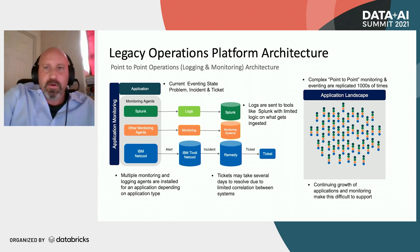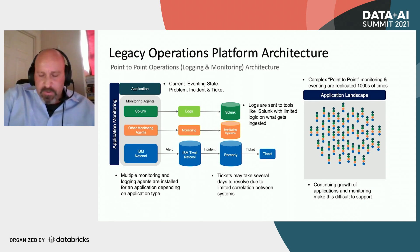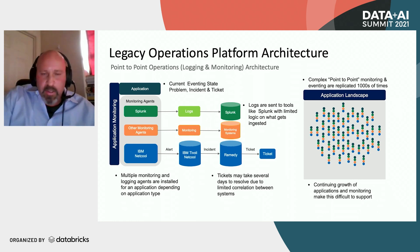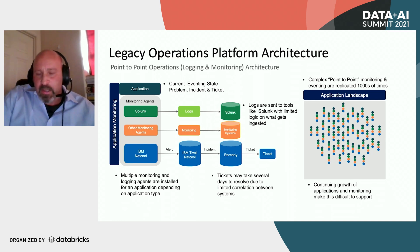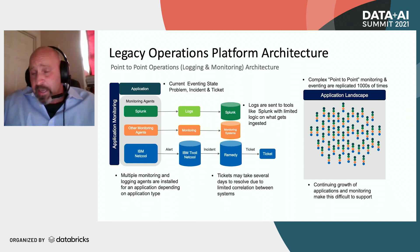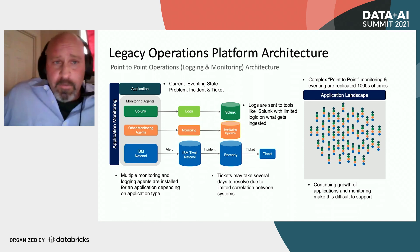One of the challenges with current operations is the legacy operation platform architecture. Most pre-AIOps architecture is mainly around logging and monitoring. If you look at this diagram, you'll notice that most applications are instrumented with agents like Splunk, Elasticsearch, or Netcool. Each application, whether running on bare metal or VM, has that agent implemented and they all send logs simultaneously. The result is a chaotic, point-to-point environment with a lot of replication and duplication of data, as well as the agents and software deployed for ops.